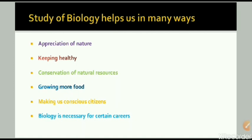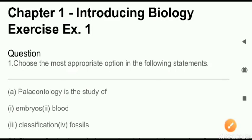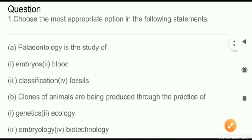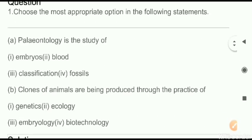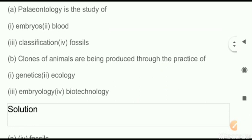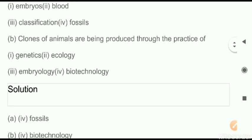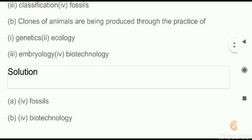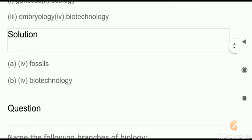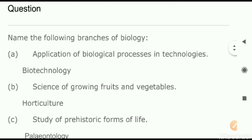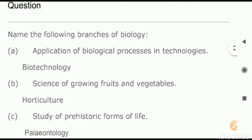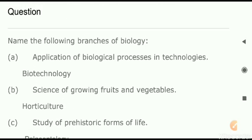That is all for the explanation part. We will now move on to the exercise part and have a discussion of the exercise part of chapter 1. Question number 1: choose the correct option. First — paleontology is the study of? Answer: fossils. Next — cloning is done where? In biotechnology.